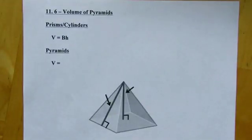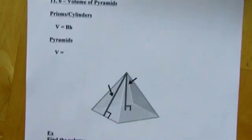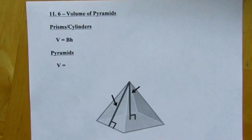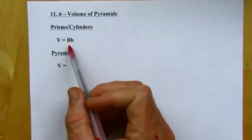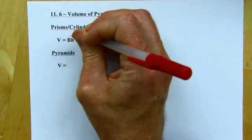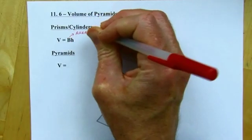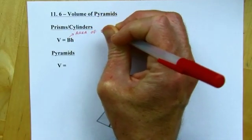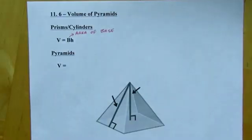Okay, 11.6 is called volume of pyramids. In the last section we talked about prisms and cylinders, and the volume formula was the area of the base (this is area of base) times the height. The height's the distance between the two bases.